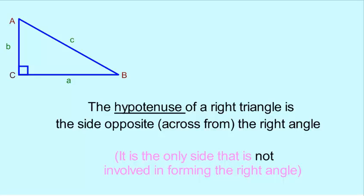So again, side C is not involved in forming angle C. That's what makes it the opposite of angle C. And if they ask you, well, then what's the hypotenuse of this triangle, like we said, it would be side C.